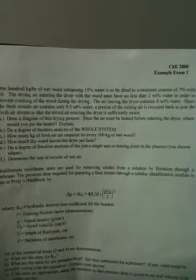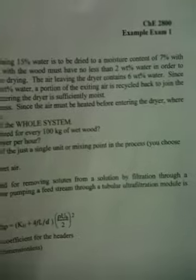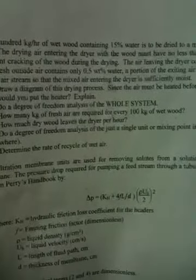We've been zooming in on this problem for a little bit here. Hopefully you guys have read it. If it's not readable, I'll read it right now. It says, 100 kilograms an hour of wet wood containing 15% water is to be dried to a moisture content of 7% with the air. The drying air entering the dryer with the wood must have no less than 2% water in order to prevent cracking of the wood during the drying. The air leaving the dryer contains 6% water.